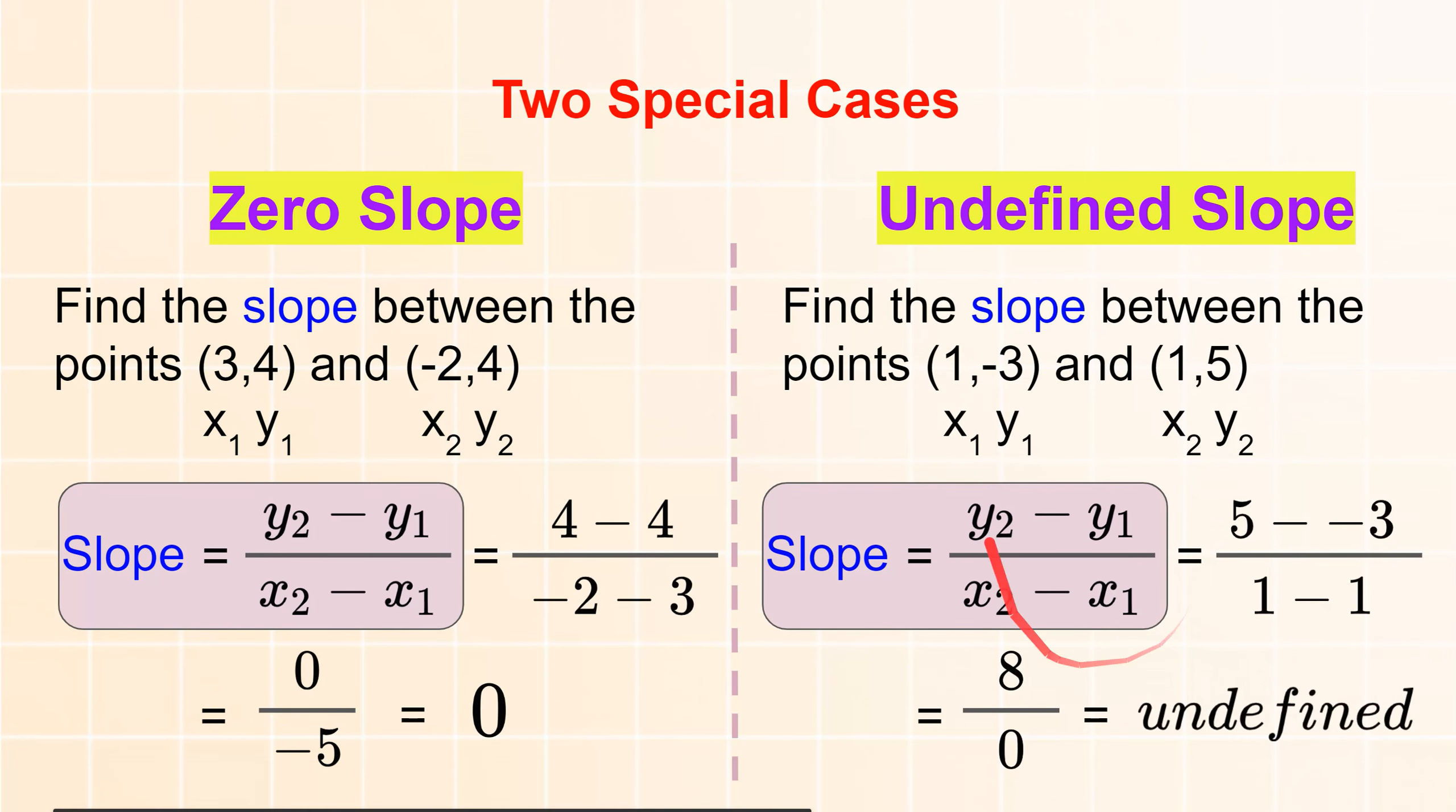Later on, we'll discuss that this line is undefined, which is vertical. And this 0 slope is a horizontal line. And this is coming later on.